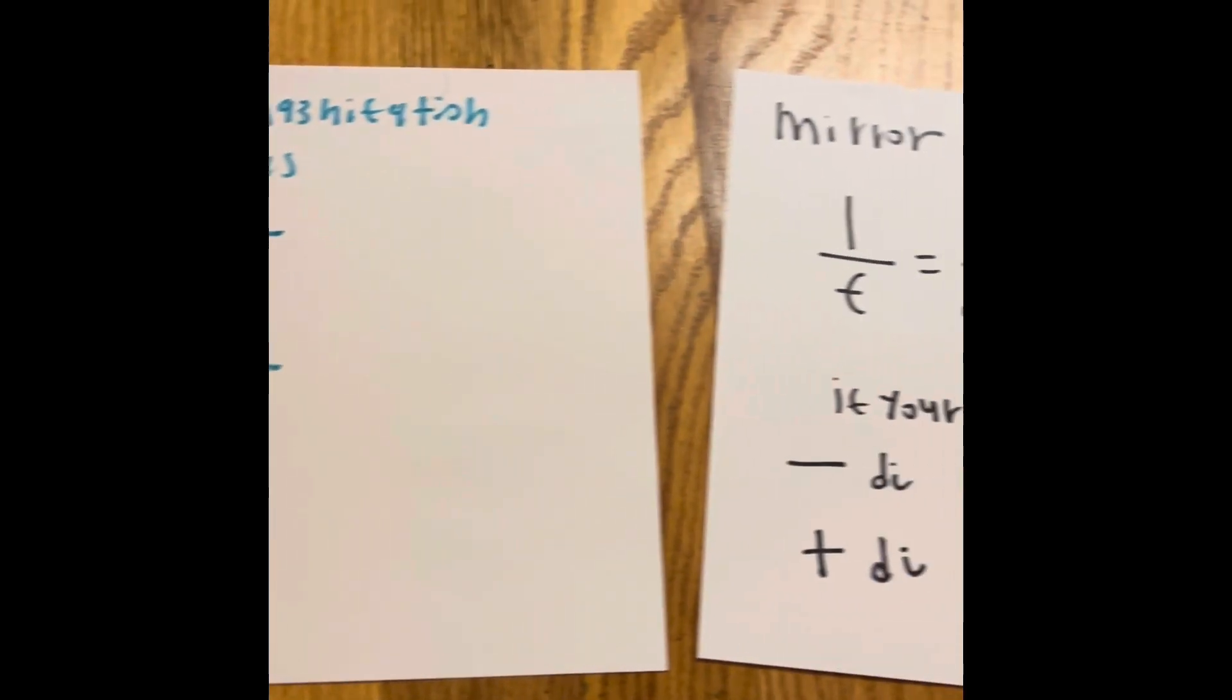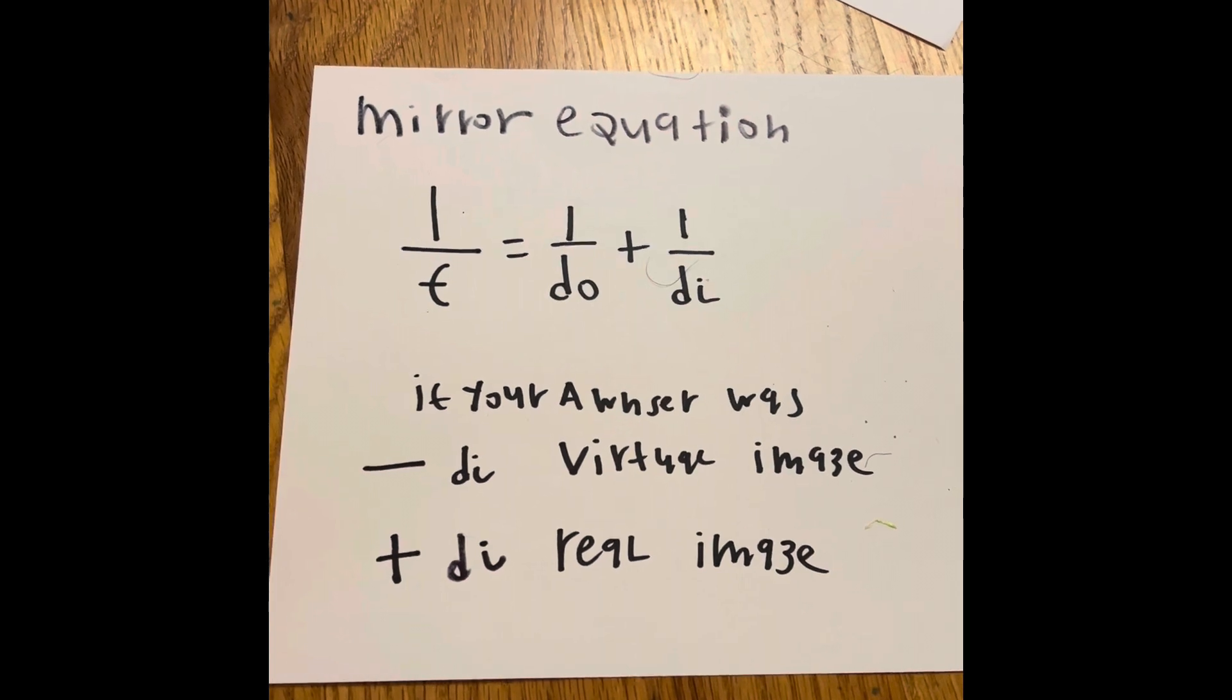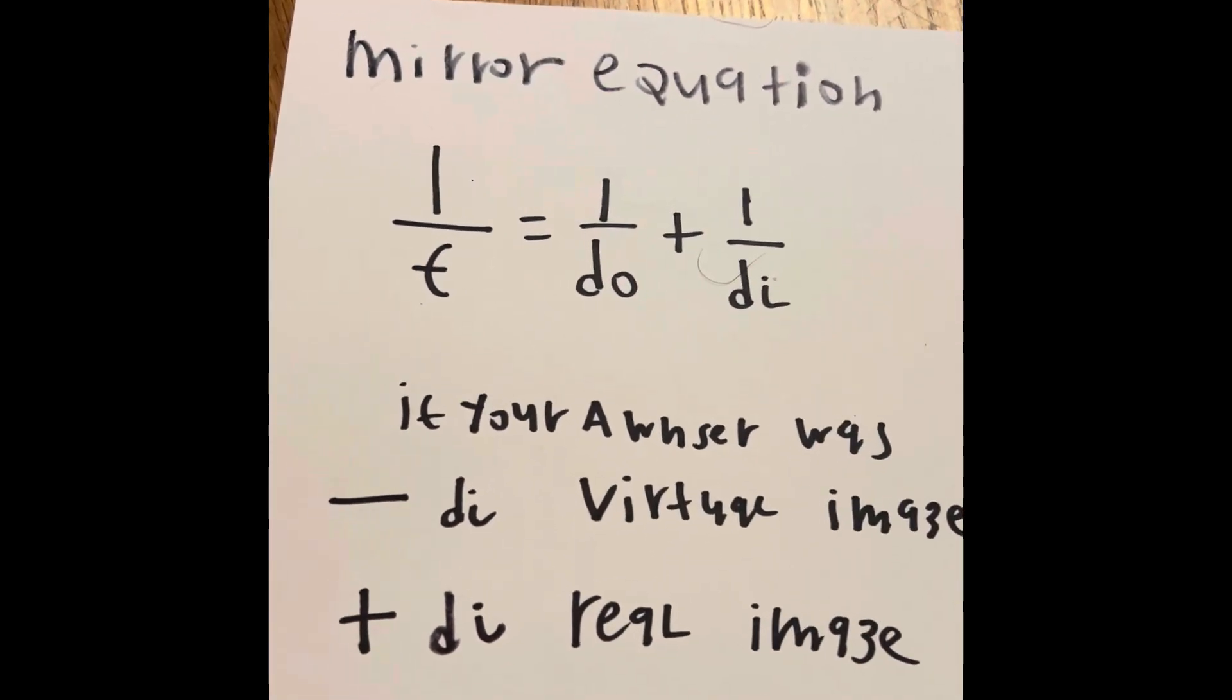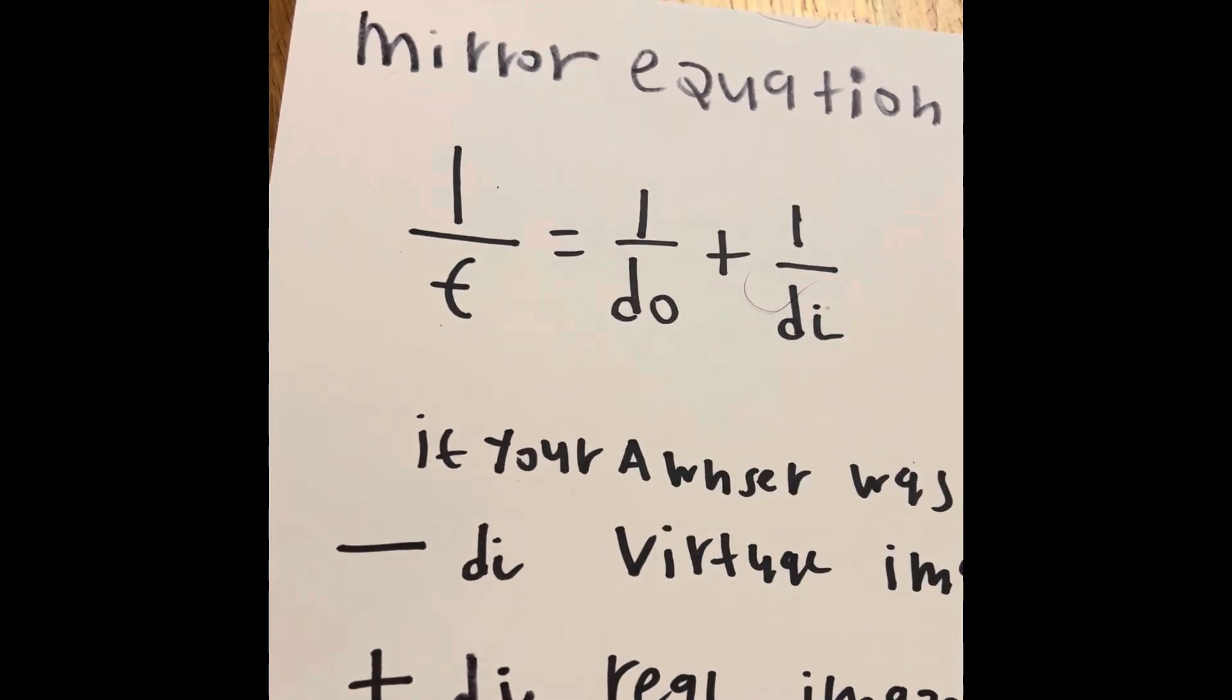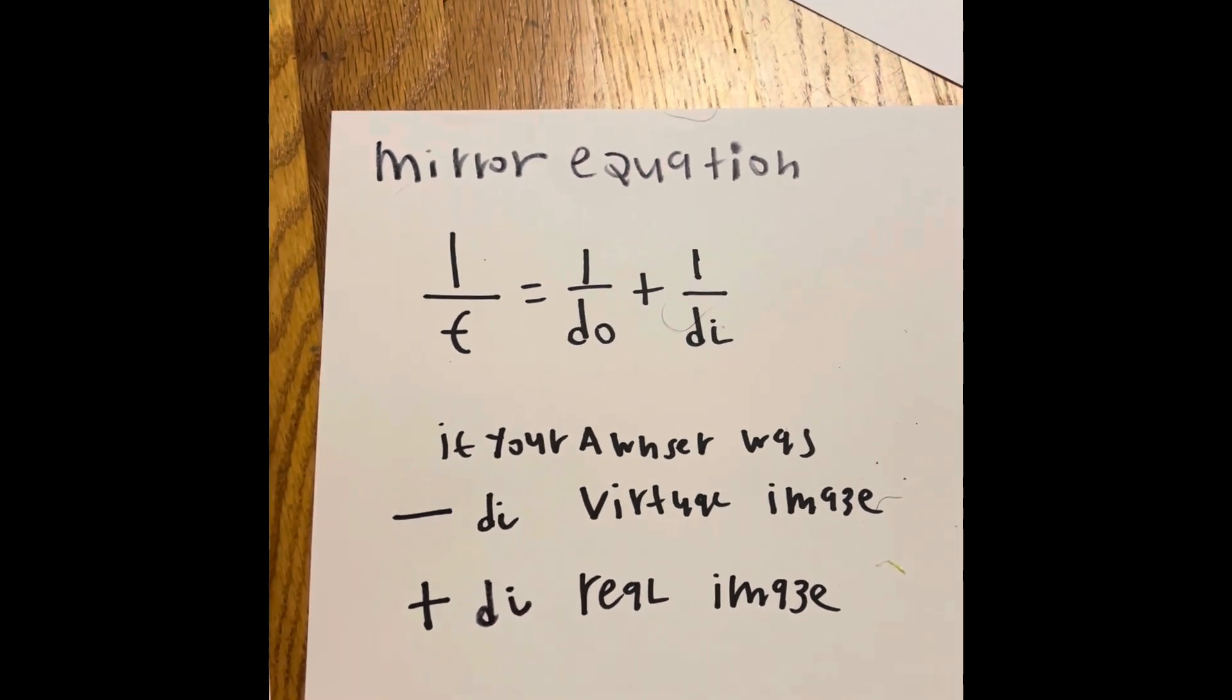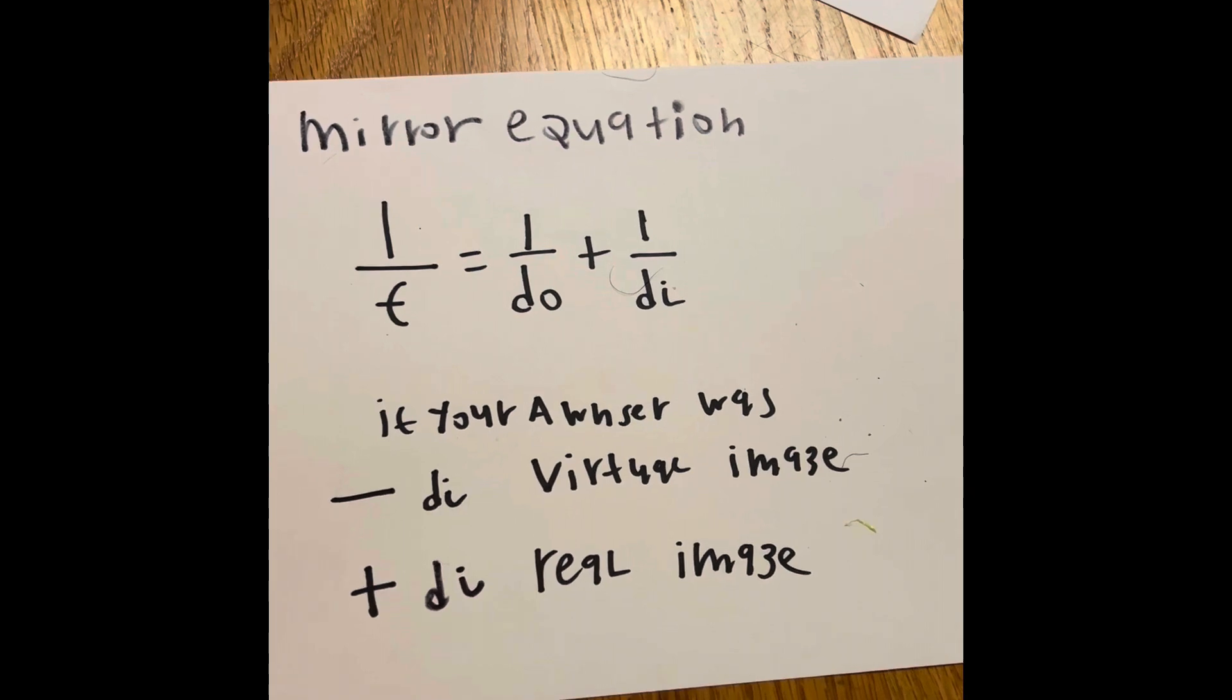The first one we're gonna take a look at is the mirror equation. The mirror equation can be also used with lens too. It's a way to help us understand if the image that's being generated is a virtual image or if it's a real image. The formula is 1 divided by f equals 1 divided by do, which represents the distance of the object, plus 1 divided by di, the distance of the image. If your answer was negative di, then it would become a virtual image. If it was a positive di, then it would become a real image.